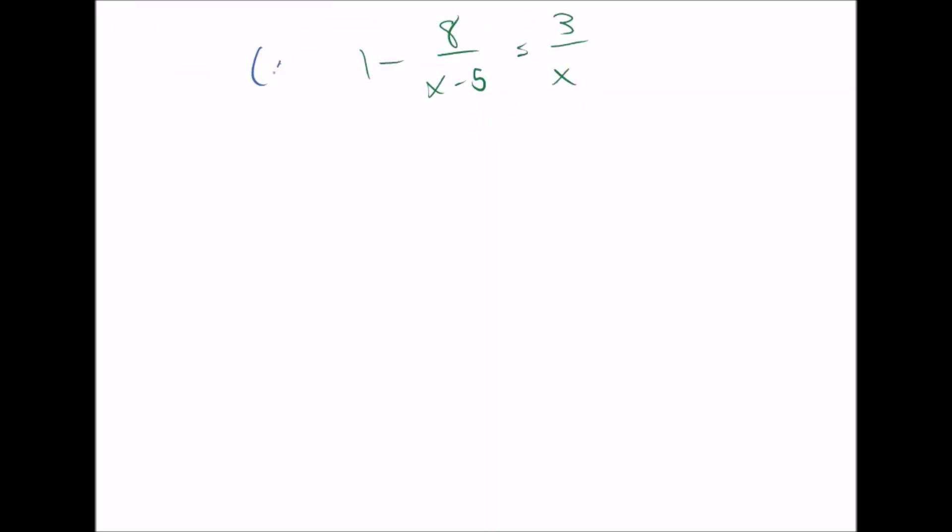So multiply this times x minus 5 and x. Multiply this one times x and x minus 5. And this one, same thing, x and x minus 5.